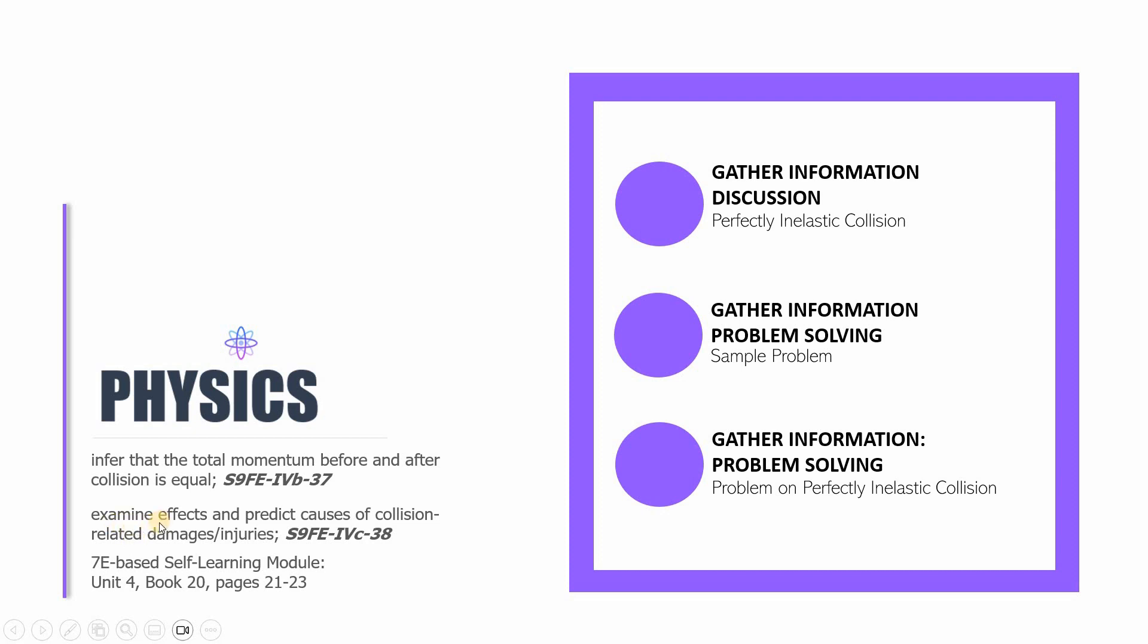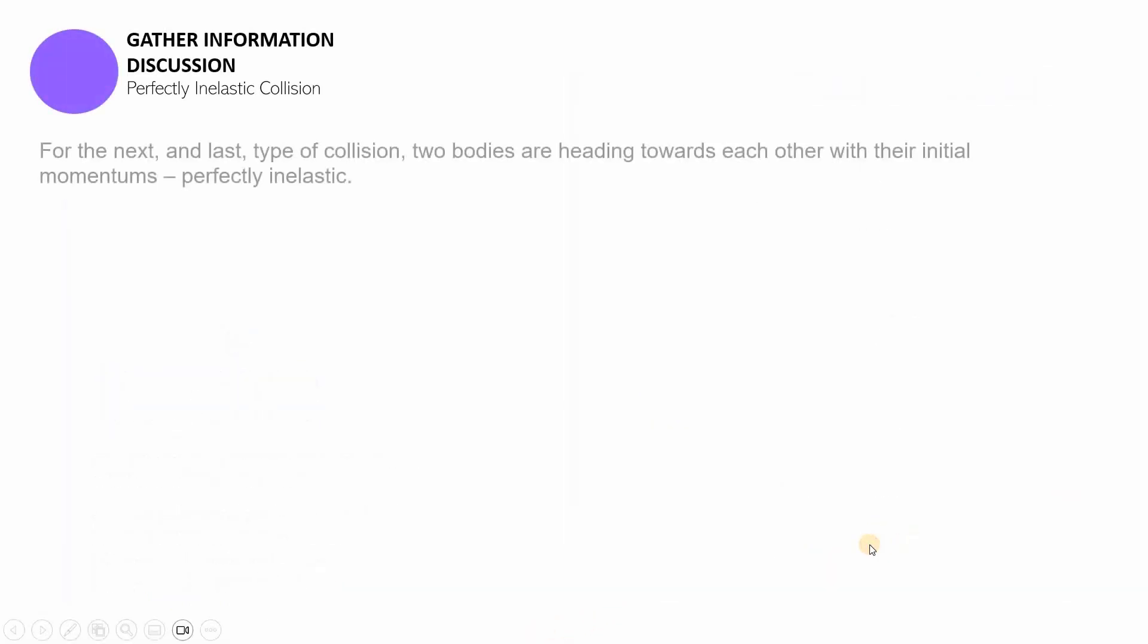The next one is you have to be capable of examining the effects and predicting the causes of collision related damages and injuries. This video lesson is based on the 7E-based self-learning module in Science 9 which I wrote for my master's degree, specifically in Unit 4, Book number 20, pages 21 to 23.